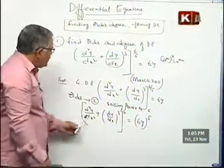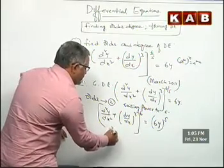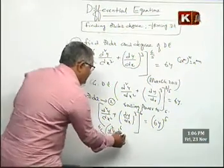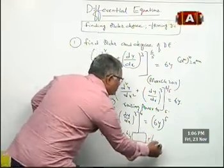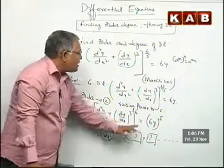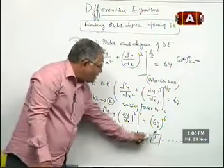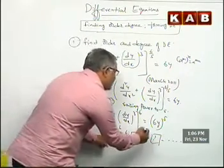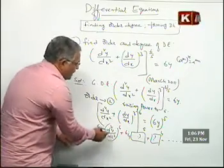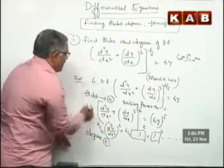Now, you need not expand, but by the binomial theorem, if you expand this, you get d²y/dx² whole power 6 as the leading term, followed by 6C0 + 6C1 into some expression, and so on. The highest differential is d²y/dx² with power 6 — it forms a polynomial with powers 6, 5, 4, 3... So the degree is 6. Order is 2, degree is 6.